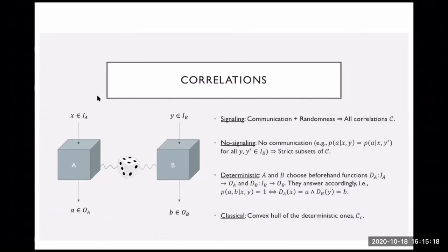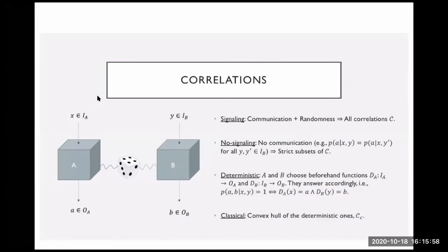The easiest way for them to answer is to meet beforehand and decide on functions: a function for box A that for every input gives an output, and a function for box B that for every input gives an output. If box A got an X, it will always answer a(X); if box B got a question Y, it will always answer b(Y). The set of all correlations generated this way are called deterministic.